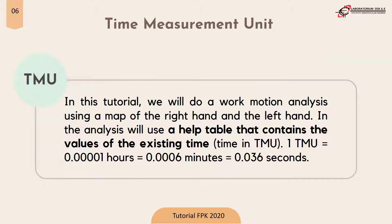Next is the Time Measurement Unit or TMU. In this tutorial we will do a work motion analysis using a map of the right hand and the left hand. The analysis will use a help table containing the value of the existing time in TMU, where one TMU equals 0.00001 hours, or 0.006 minutes, or 0.036 seconds.